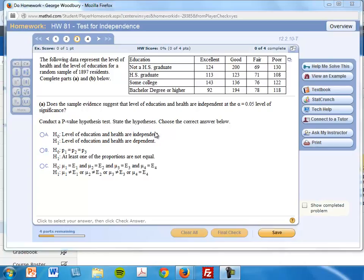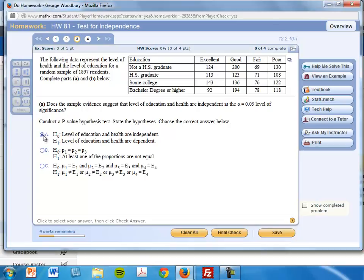I can see that this is an independence test, so we're going to say that the level of education, which is here, and the health, which is across the top, are independent. That's H0.